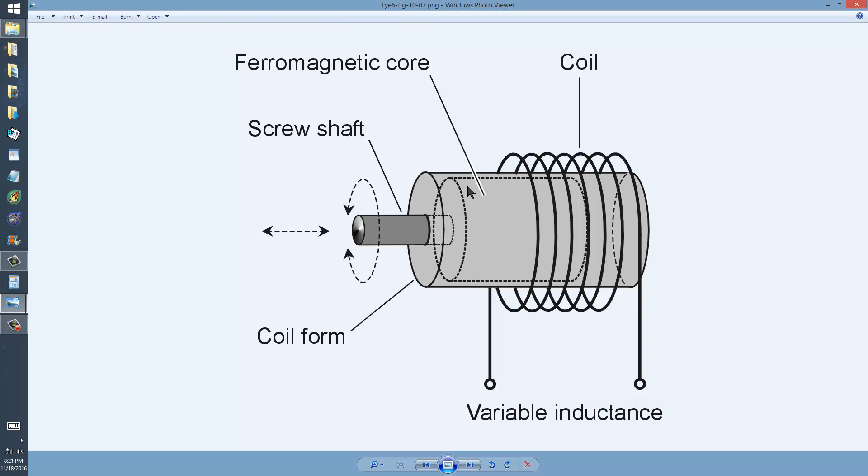The way that we vary the inductance is by moving more or less of this core material in and out of the inductor, and you can do that in two ways. You can either directly push and pull it in and out, but that's not typically the way that it's done.